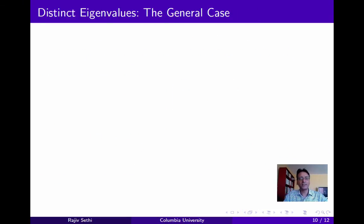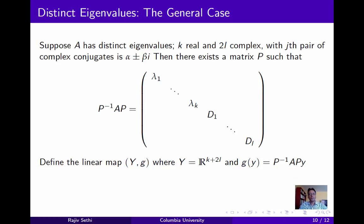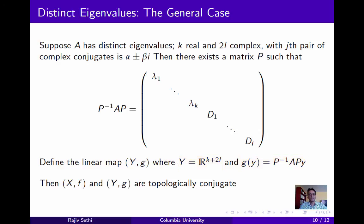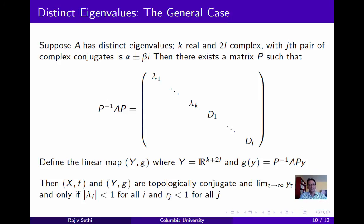We can put these facts together to discuss the general case of distinct eigenvalues. If A has distinct eigenvalues, k of which are real and 2l of which are complex, then there exists a matrix P that can be used to transform A into a canonical block diagonal form. If you define the linear map (Y, g), where Y is R to the k plus 2l, and g(y) is equal to this block diagonal matrix times y, then the original system and the system (Y, g) are topologically conjugate. The latter system consists of k plus l separate systems: k are one-dimensional and l are two-dimensional. The unique fixed point at the origin is stable if and only if every real eigenvalue is less than 1 in absolute value and every complex eigenvalue lies within the unit disc in the complex plane.